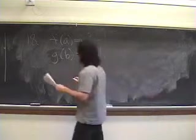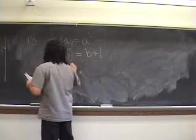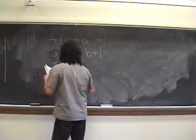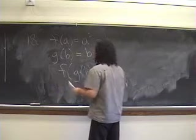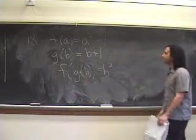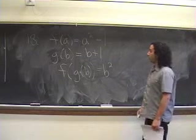The question is, what's b if f of g of b is b squared? So we want to know what b is.